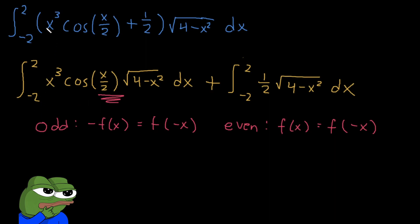So let's verify that. Let's say that our negative f of x is negative x cubed cosine x over 2 multiplied by 4 minus x squared. Now would this be the same as negative x cubed cosine negative x over 2 multiplied by the root of 4 minus negative x squared?